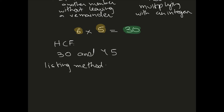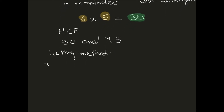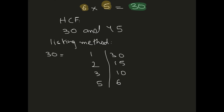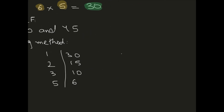In the listing method you list down all the factors. For 30: 1 times 30 is 30, 2 times 15 is 30, 3 times 10 is 30, and 5 times 6 is 30. As soon as your numbers start repeating you stop there, so we don't write 6 again.